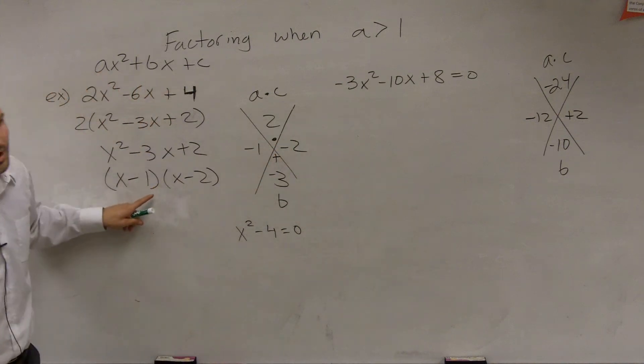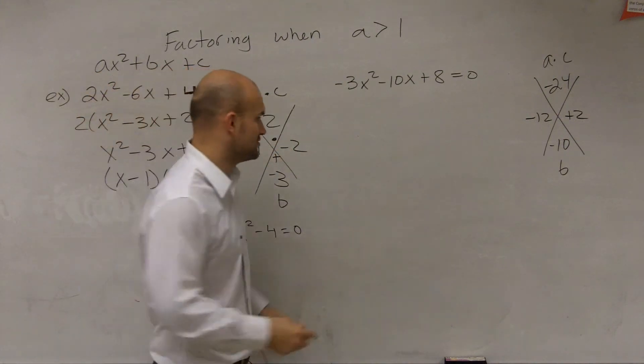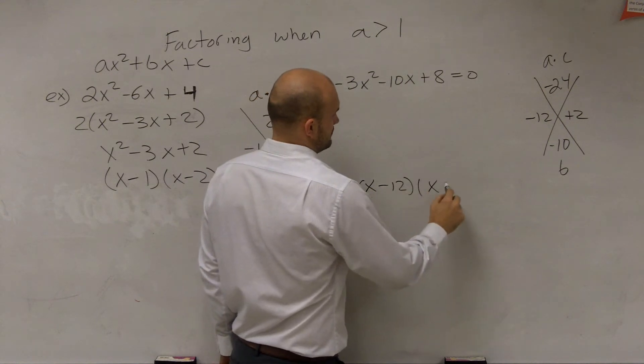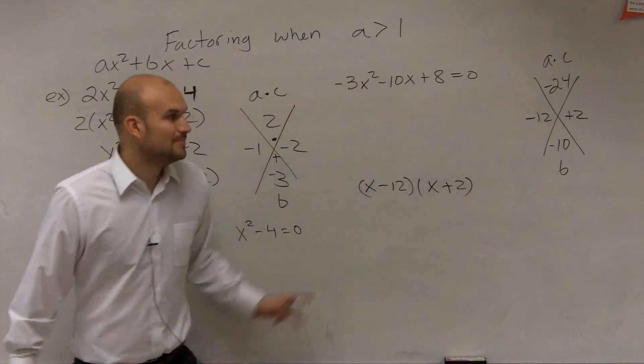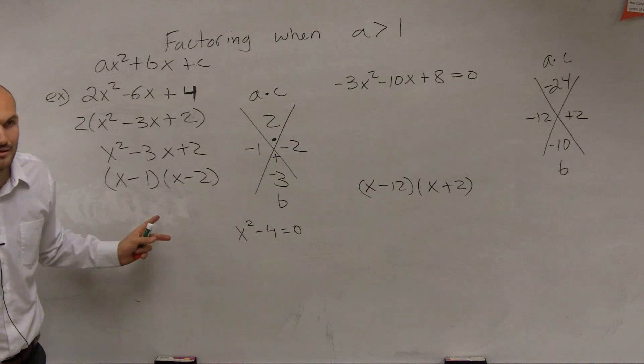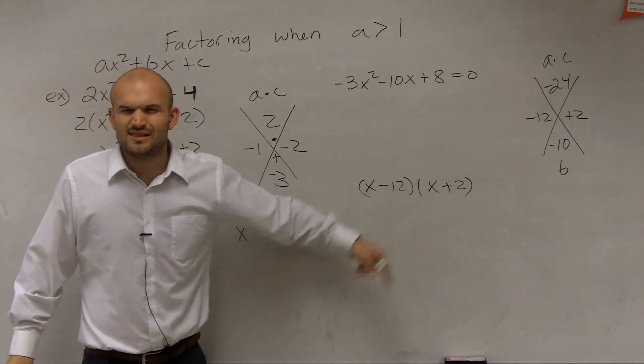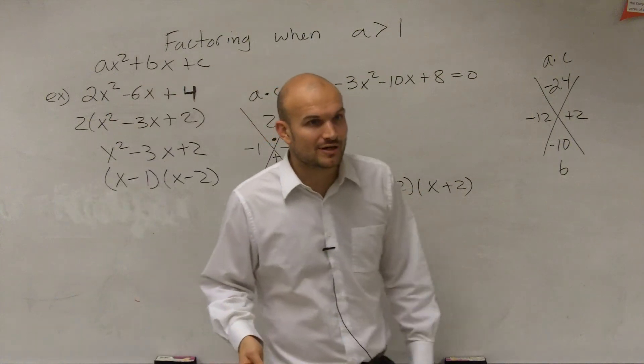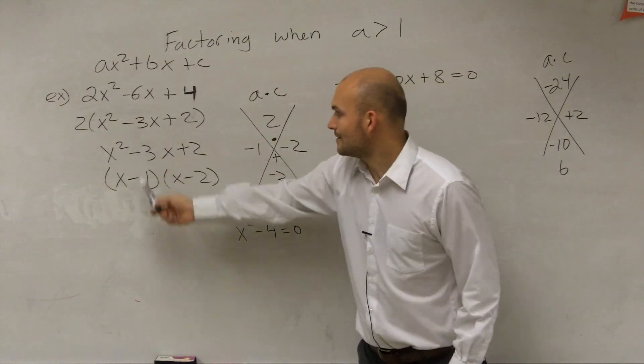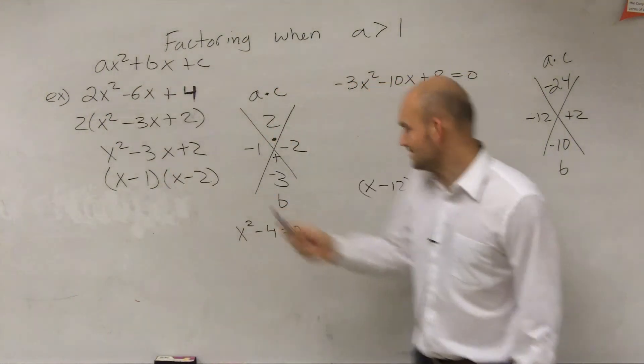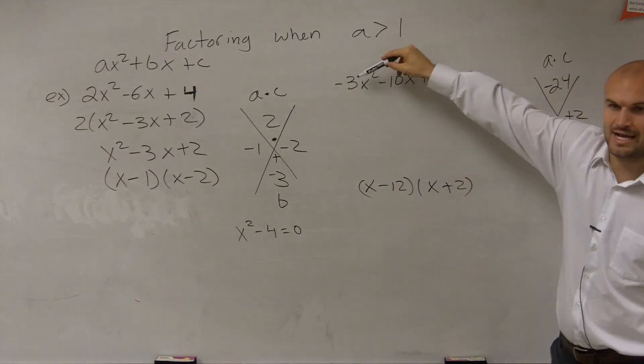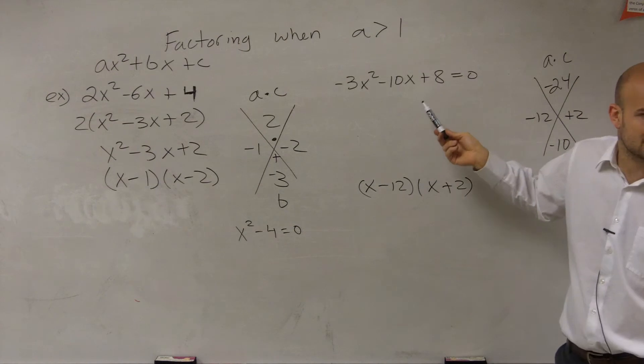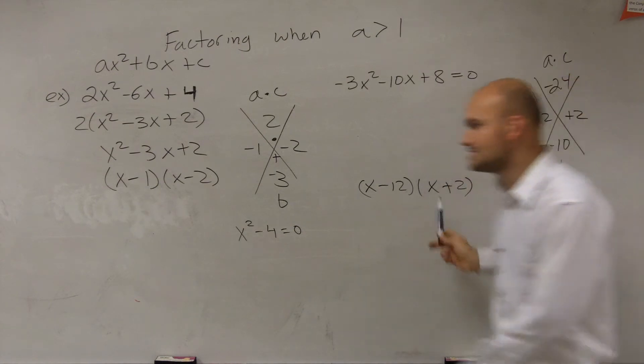Now, rather than rewriting it as a product, here's the biggest mistake students make. They write (x - 12)(x + 2). Some of you might be asking, why is that wrong? You can check: does x times x give you -3x²? No. Does -12 times 2 give you positive 8? No. So this is not the answer.